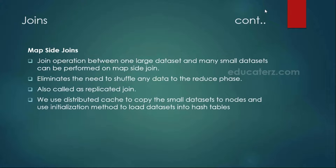In the map-side join, let's assume that we have one data set that is bigger and the other data sets are very small. With such data sets available, what we can do is, with the help of the map-side join using the distributed cache — the meaning of the distributed cache is that whatever small files we have, we are going to store all the small files into the main memory of all the data nodes, so that instead of performing disk reads and writes, it directly accesses the files from main memory itself.